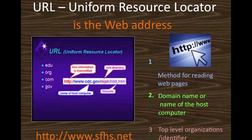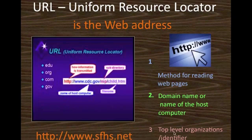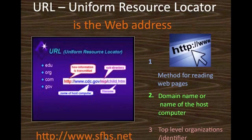The second part of the URL is very important — this is the domain name, or the name of the host computer. The third part is called the top-level organization or identifier. Looking at our school website, you see HTTP colon two forward slashes, and www.sfhs.net is the domain name.